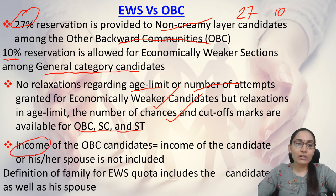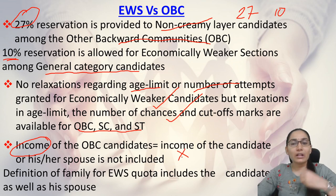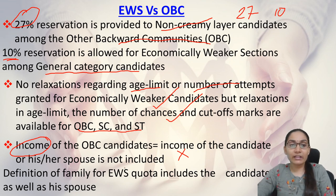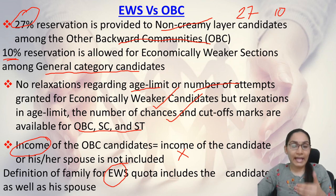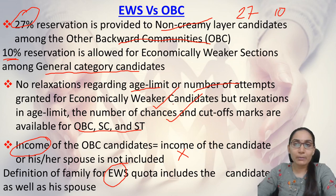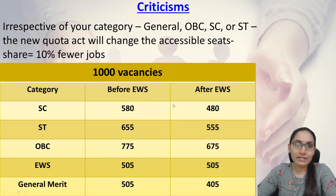Regarding income calculation: for OBC, the income of the candidate or their spouse is not included. Whereas in the definition of EWS quota, family income is taken, which includes the income of the candidate as well as the income of the spouse.